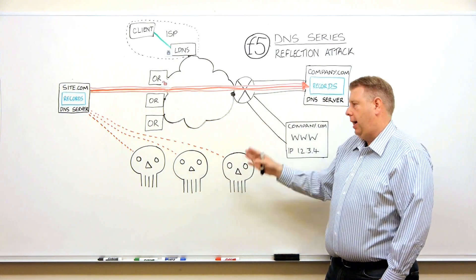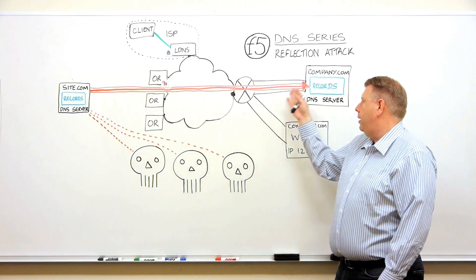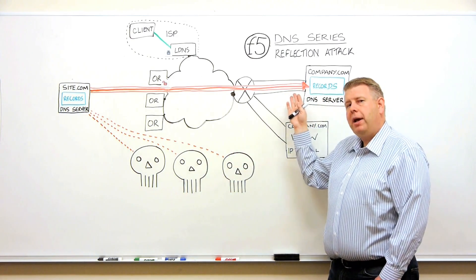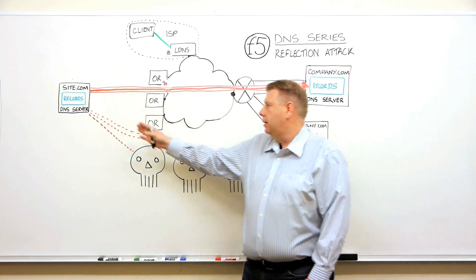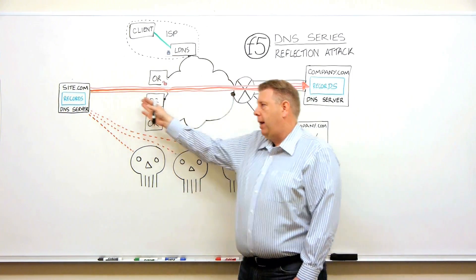On the query attack, it's a query coming into the DNS server. DNS servers are meant to handle queries. On a reflection attack, the information being sent back is responses, responses that weren't asked for.